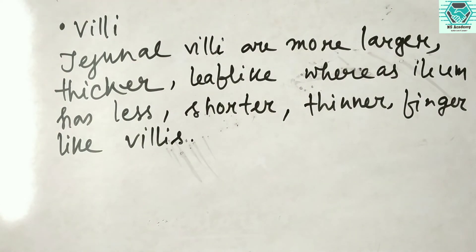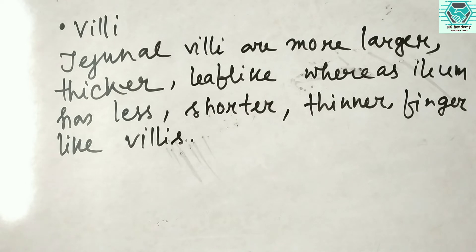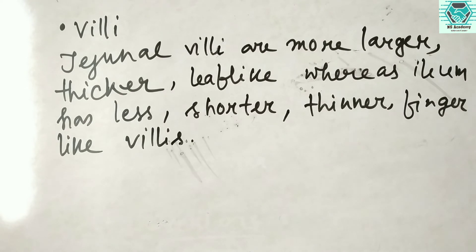The villi are present in both the jejunum and ileum. The jejunum villi are larger, thicker, and leaf-like, whereas the ileum villi are fewer, shorter, thinner, and finger-like projections. The lining of the jejunum is specialized for absorption by enterocytes of small nutrients. Once absorbed, nutrients pass from the enterocytes into the enterohepatic circulation.